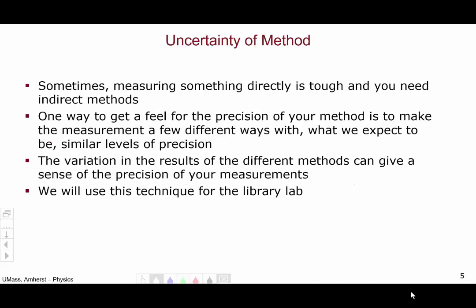However, sometimes measuring something directly is tough, and you need to use indirect methods, like we do for our library lab. One way to get a feel for the precision of your method is to make the measurement with a few different methods, with what we expect to have similar levels of precision. The variation in the results of the different methods can give a sense of the precision of your measurements. This is how we will evaluate our methods for the library lab.